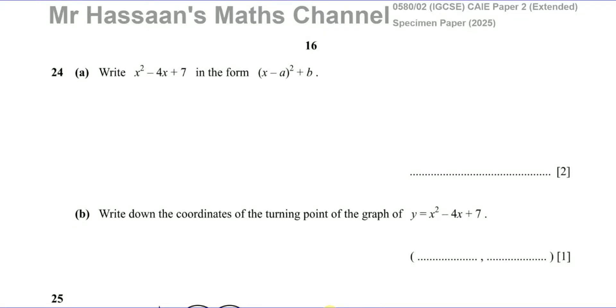Welcome back. This is Mr. Hassan's Maths Channel. I'm now answering question number 24 from the specimen paper of the new IGCSE 0580 paper 2 non-calculator extended paper. This question is firstly about completing the square. It says write x squared minus 4x plus 7 in the form x minus a squared plus b.